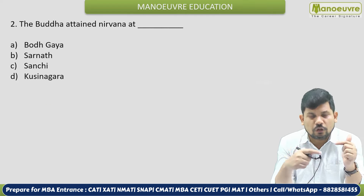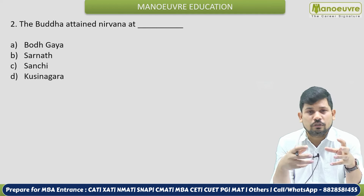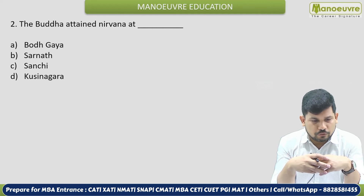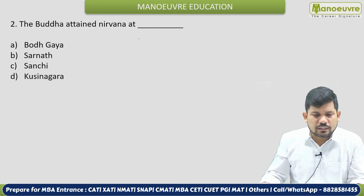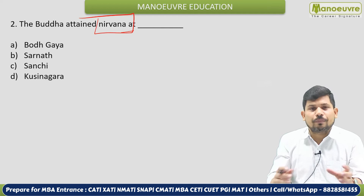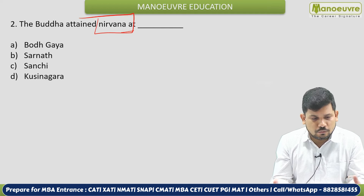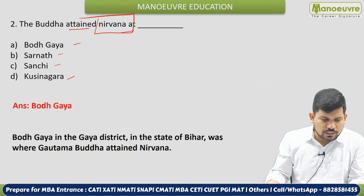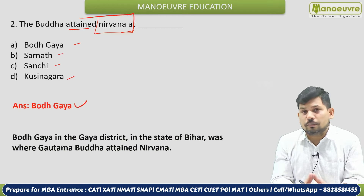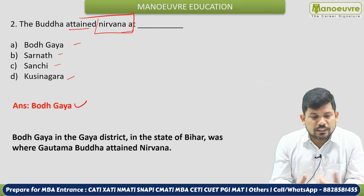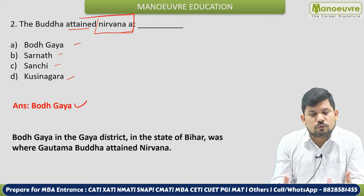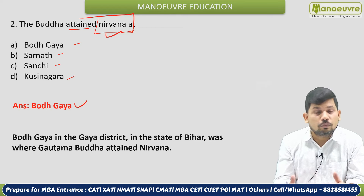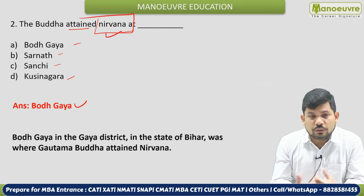Watch this video till the end because along with 50 questions, some additional very helpful information will also be provided. The next question: The Buddha attained Nirvana — what does Nirvana mean? It means the supreme knowledge of Mahatma Buddha. The places associated are Bodh Gaya, Sarnath, Sanchi, and Kushinagar. The correct answer is Bodh Gaya. Similarly, what is the supreme knowledge attained by Mahavir Swami? That is called Kaivalya.